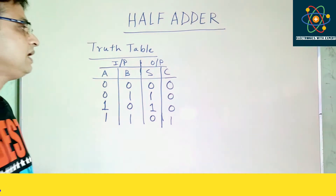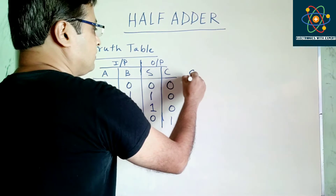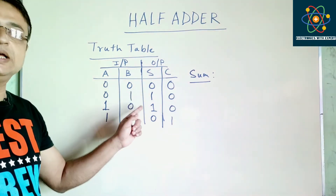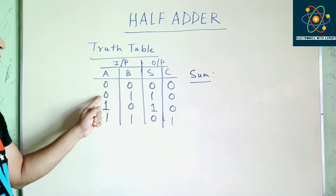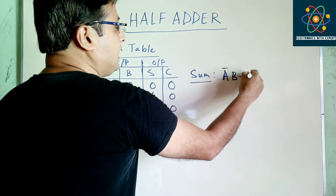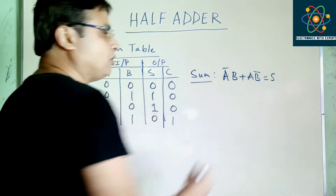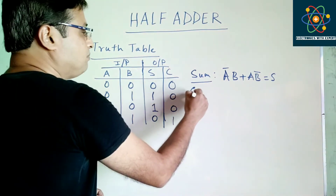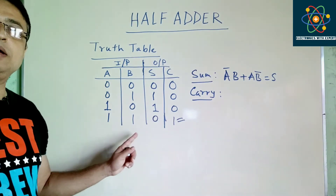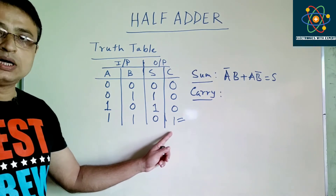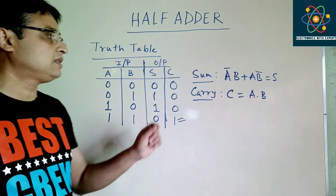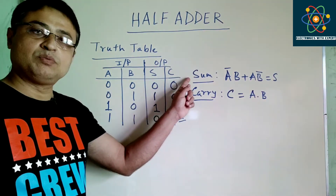Now let us write the output expressions for sum and carry. For the sum output, we only consider the states when sum equals 1. It can be written as A̅B + AB̅. That is our sum output expression. For the carry output, only when A and B are both equal to 1 does carry occur, so the expression is C = A·B. These are the output expressions for a half adder.